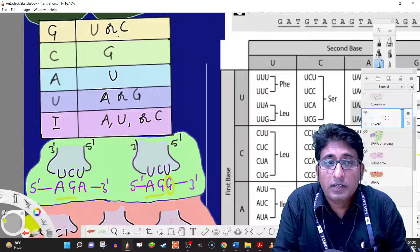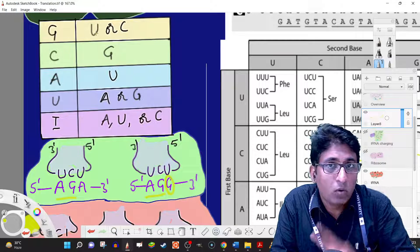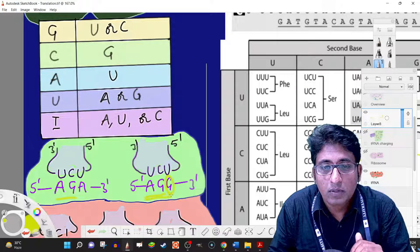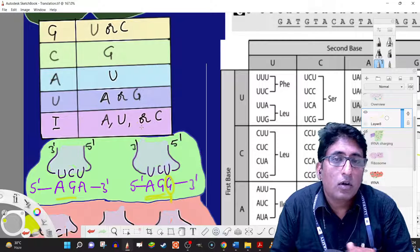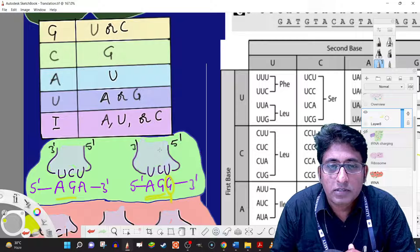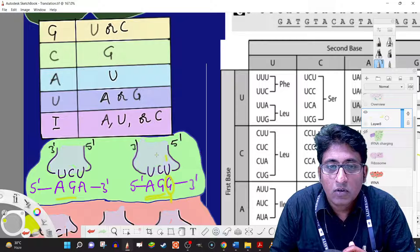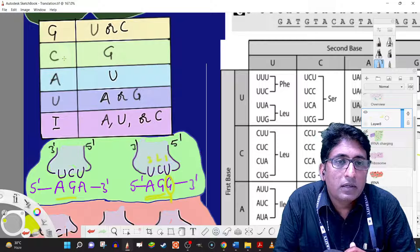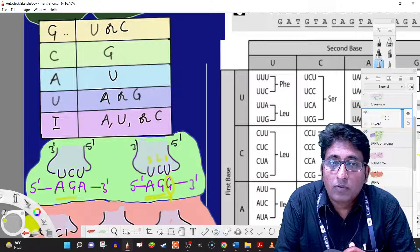This is the third position of the codon reading from 5' to 3', or if you want to talk in terms of the anticodon, it's the first position of the anticodon where base pairing follows these rules.